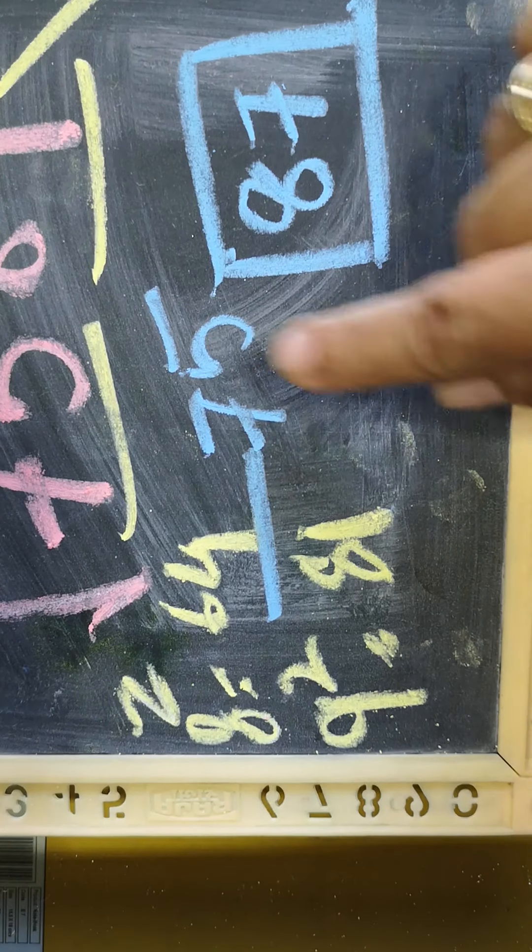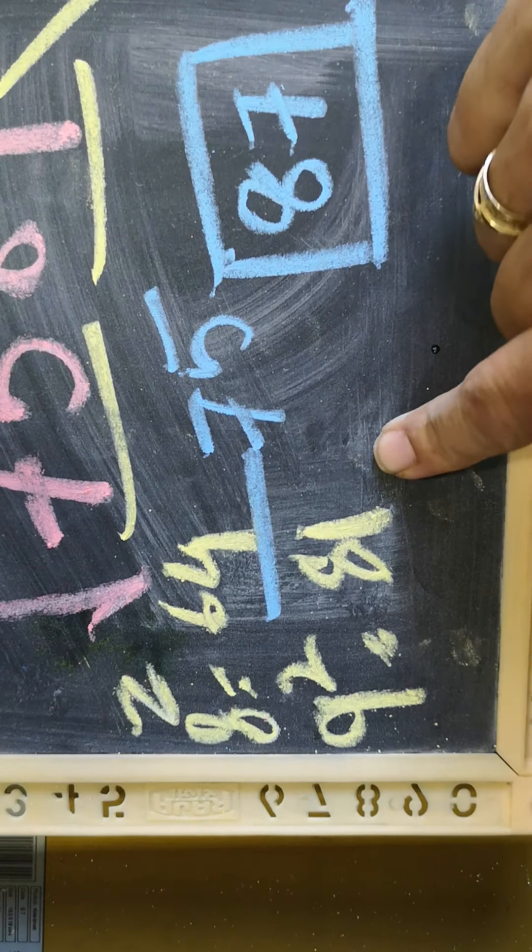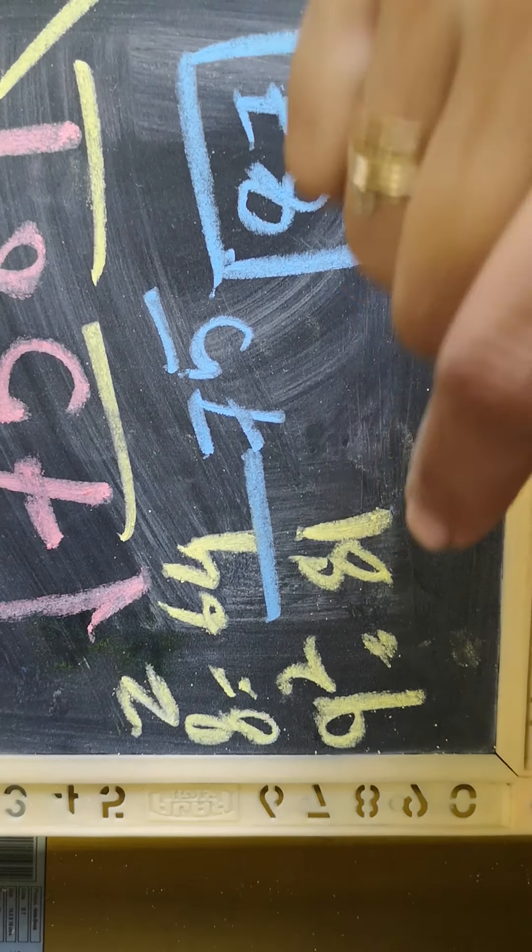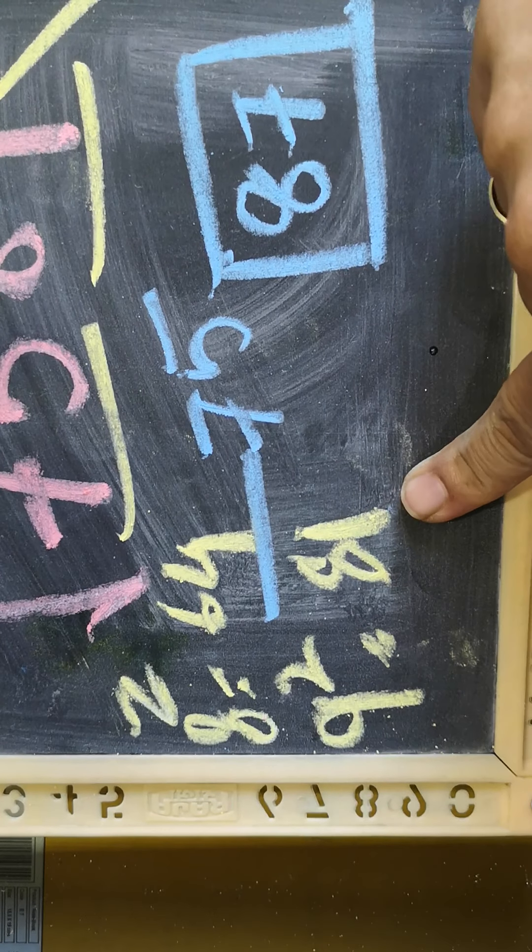So now 75 is closest to whom? Is 64 or 81? It is closest to 81. So the nearest figure to 75 is 81.